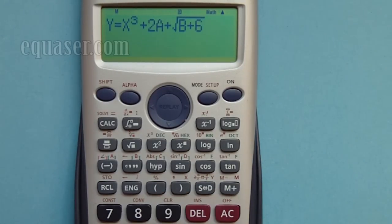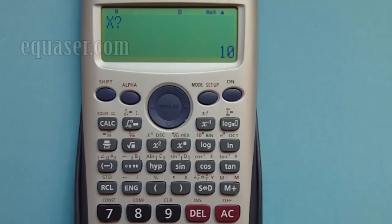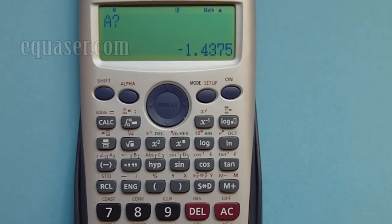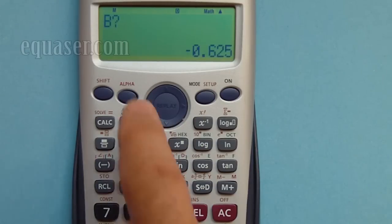I press CALC. The calculator is asking for X - let's assume X is 5. Then it's asking for A, so A any value - 2.5. And it's asking for B, and you enter B 9. Let's say B is 9, so it evaluated.